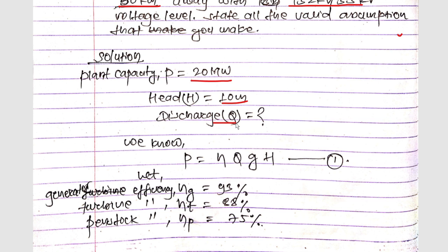To determine the discharge, we use the formula P = η × Q × g × H. The efficiency is not given, so we assume generator efficiency as 93%, turbine efficiency as 88%, and penstock efficiency as 75%.